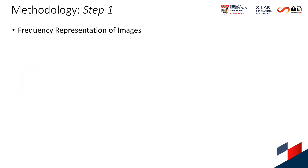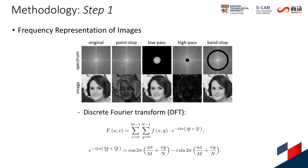In this study, we propose Focal Frequency Loss, which is complementary to existing spatial losses. It is formulated in three steps. First, we explicitly transform both the real and generated images to their frequency representations by standard discrete Fourier transform, facilitating optimization in the frequency dimension.